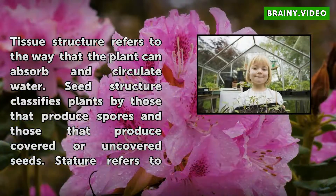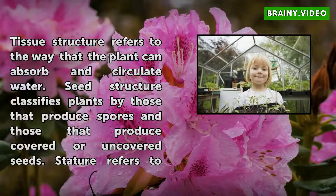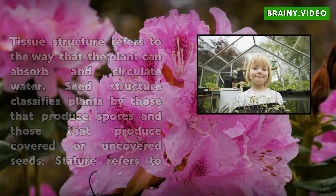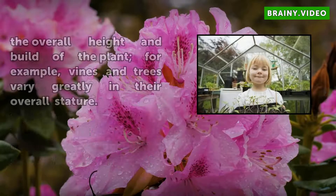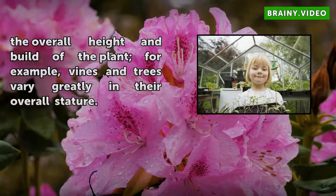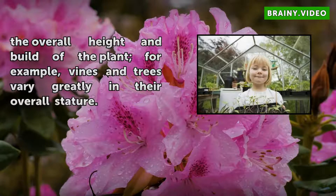Seed structure classifies plants by those that produce spores and those that produce covered or uncovered seeds. Stature refers to the overall height and build of the plant. For example, vines and trees vary greatly in their overall stature.